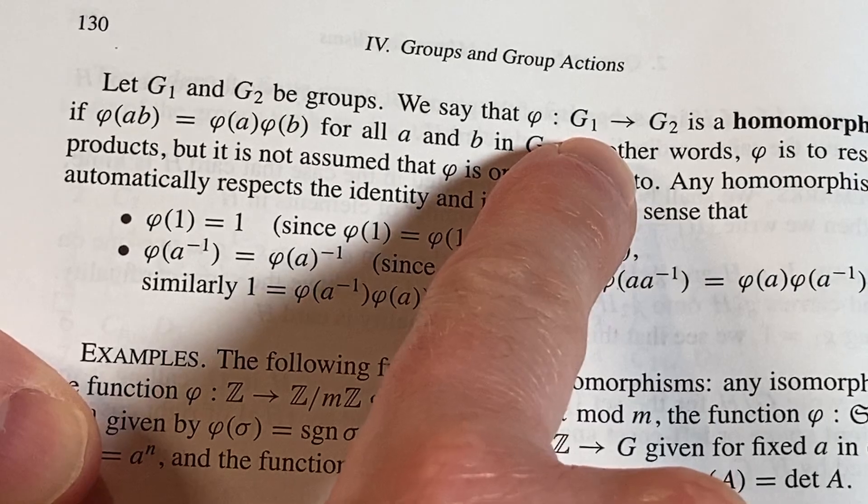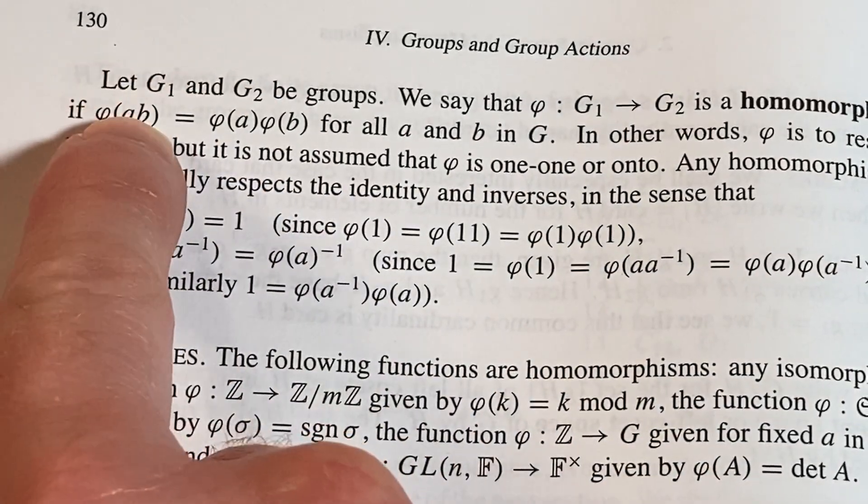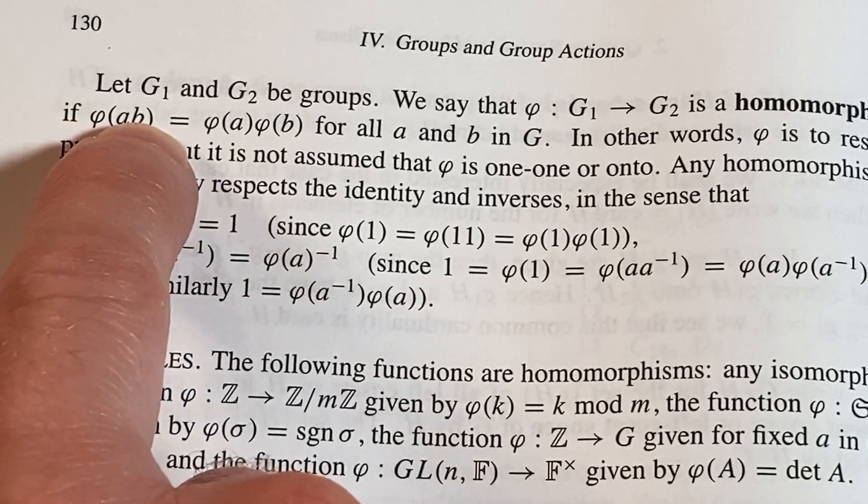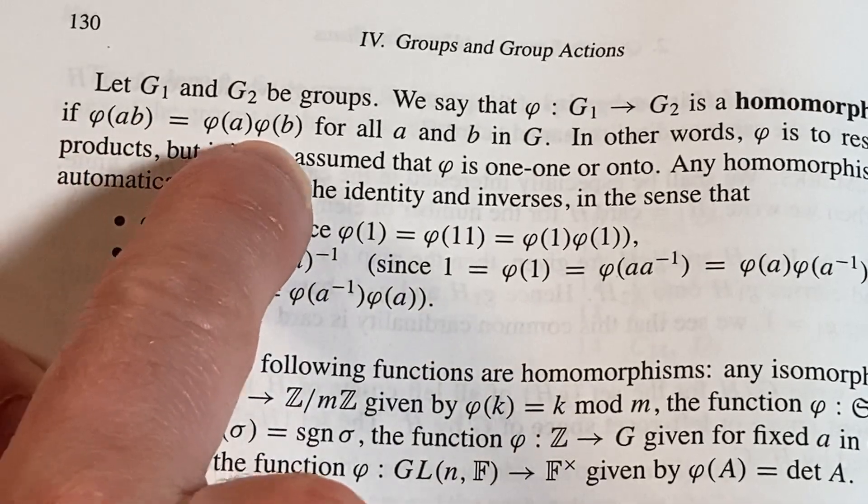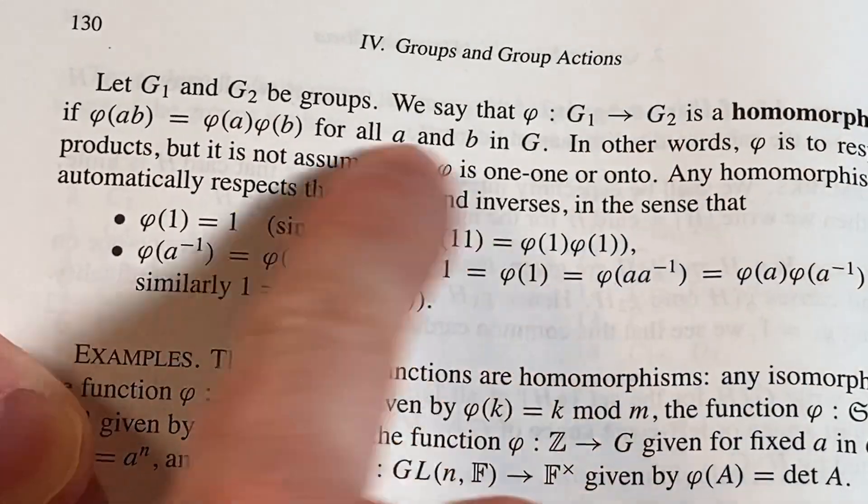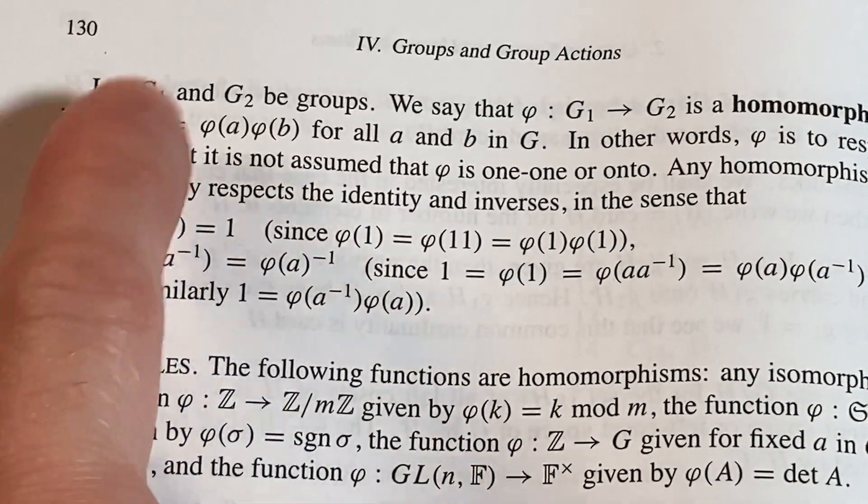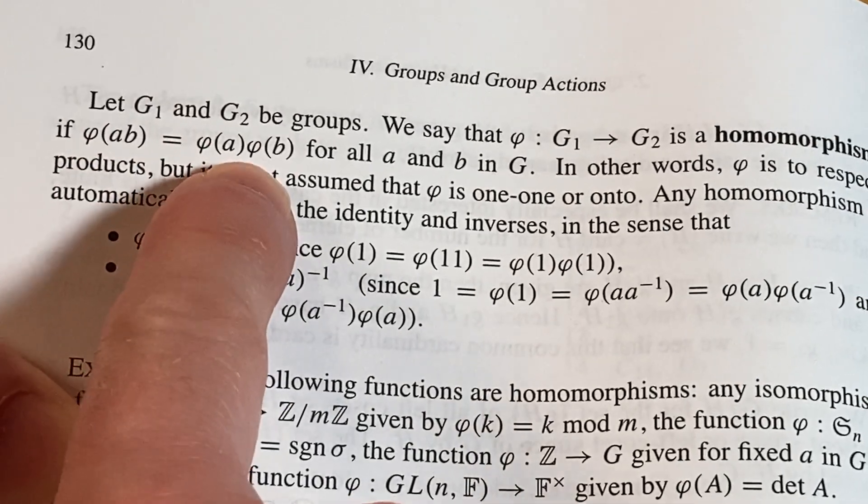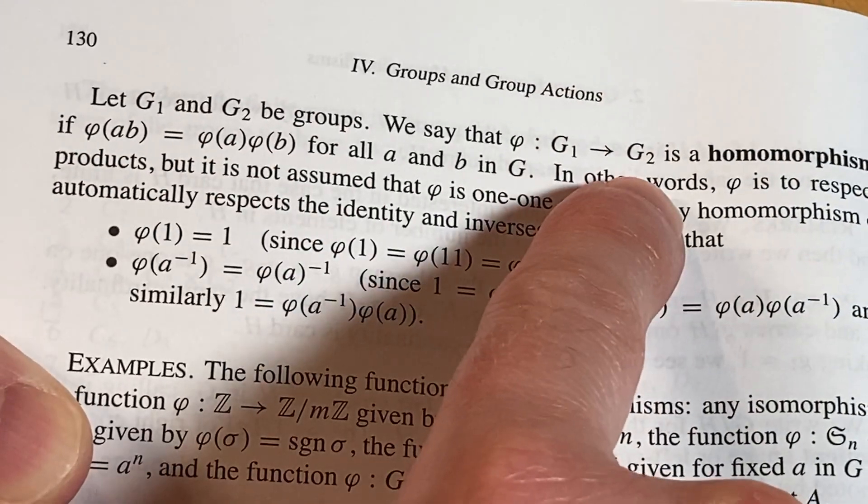So it kind of preserves the multiplication. Multiplication in G₁ corresponds directly to multiplication in G₂. It's preserved. So it's pretty cool, it's a pretty cool thing. Now here it's multi—I say multiplication, right? Sometimes you can use a plus sign, that's addition. Usually when you use plus, it's assumed that the operation is commutative.